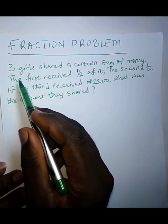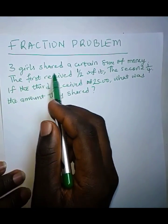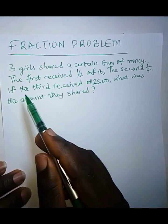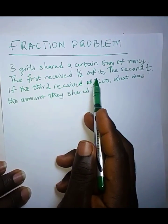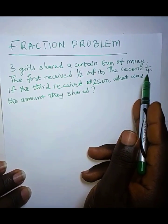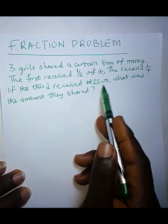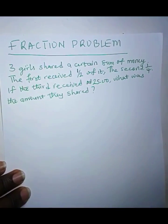Okay, here we have this fraction problem that says three girls shared a certain sum of money. The first received 1 over 2 of it, the second 1 over 4. If the third received 25 Naira, what was the amount they shared?